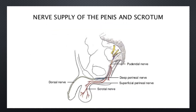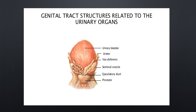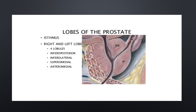Nerves supply to the penis and scrotum relate to genital tract structures connected to the urinary organs, including the urinary bladder, urethra, and vas deferens. The prostate has four lobes: inferoposterior, inferolateral, superior medial, and anteromedial.